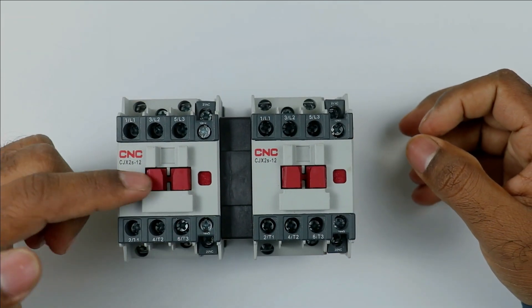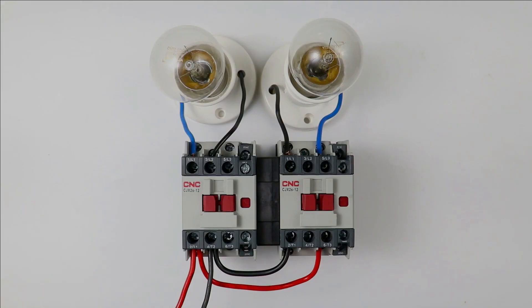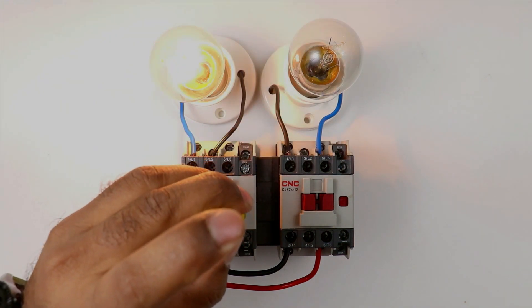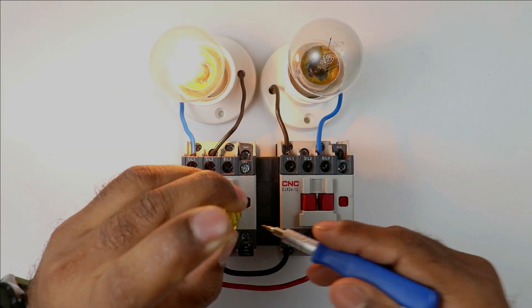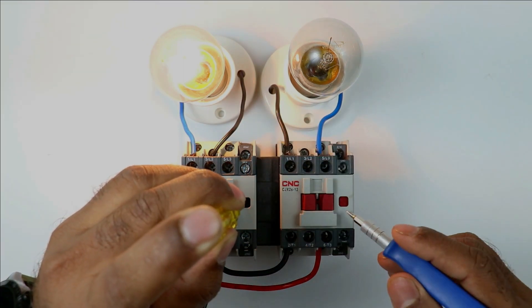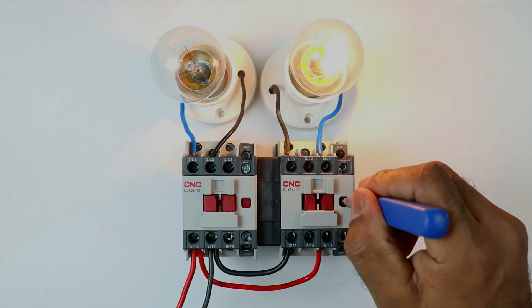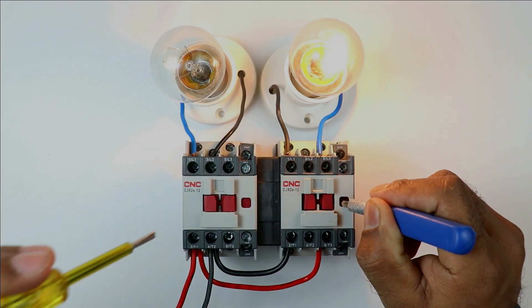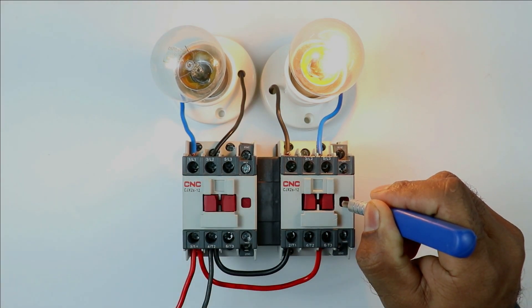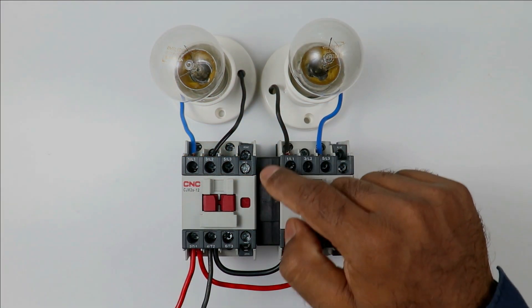For now, I am connecting a lamp with these contactors, so that you can clearly understand. Now first, I am turning on this contactor. I am directly turning this on, but you must perform electrical connection. This contactor is on now. You can see this lamp is in on condition. If I try to turn on this contactor, you can see it is locked and the lamp is not glowing. If I turn on this contactor and after that, when I try to turn on this one, you can see it is locked. You can say that we interlocked these contactors and precisely we done the mechanical interlocking.